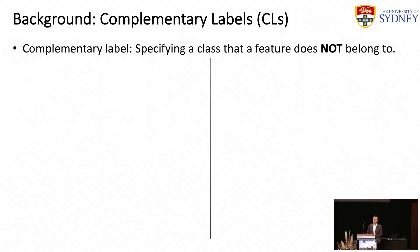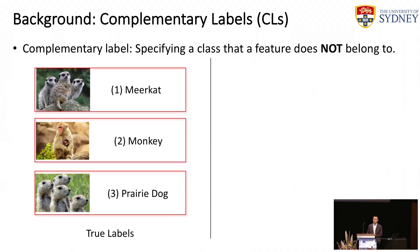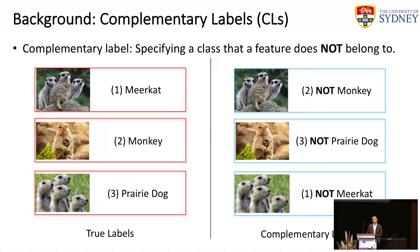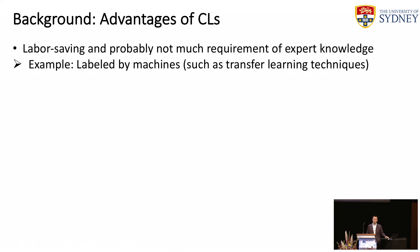Today, I will introduce a new surrogate for database true labels — that is, the complementary labels. In traditional supervised learning, the true labels indicate a class that a feature belongs to. But in learning with complementary labels, the complementary labels specify a class that a feature does not belong to.